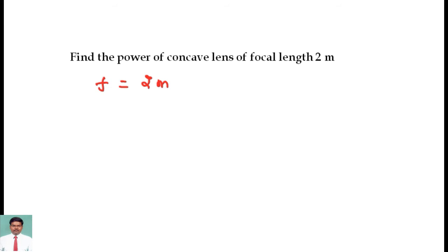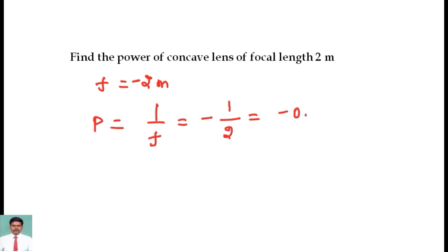We know the formula for power: power is equal to the reciprocal of the focal length, that is P = 1/f. The focal length for a concave lens is negative, so f = -2 meters. Therefore, P = 1/(-2) = -0.5 diopter.